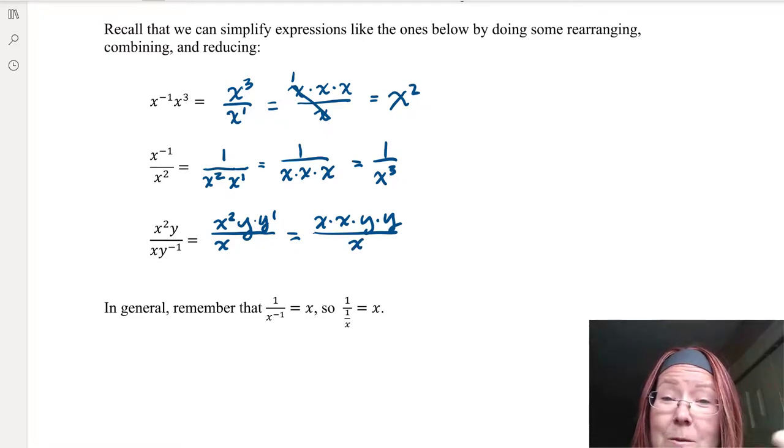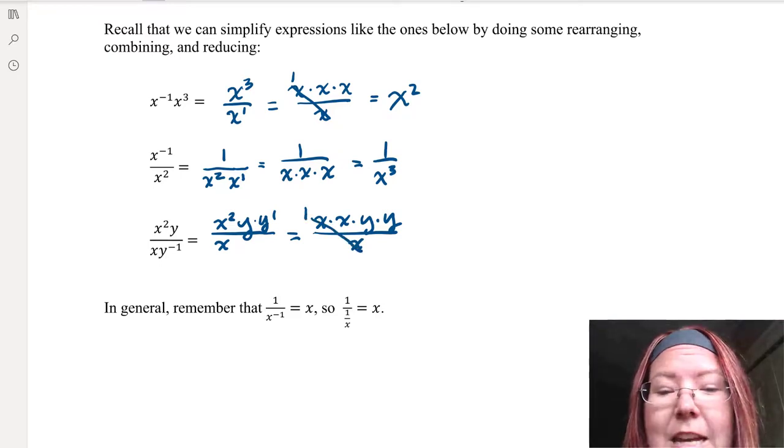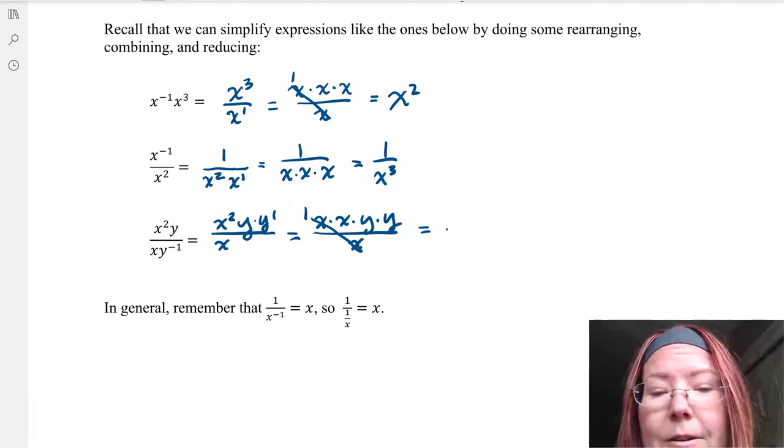A pair of x's from the numerator and denominator can reduce to make a one, leaving us with just x times y times y in the numerator, or x y squared.